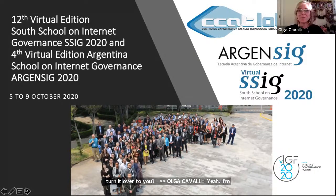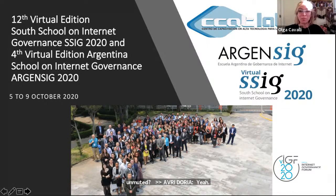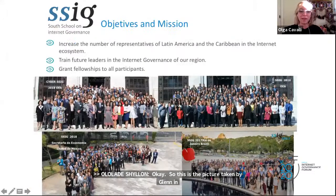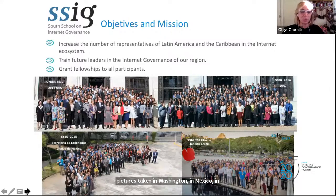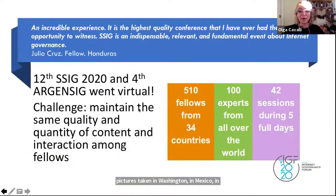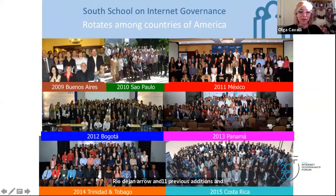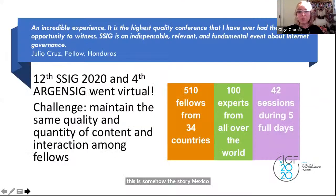This is a picture taken by Glenn in Mexico last year. I just wanted to show some pictures taken in Washington and Mexico and Rio de Janeiro in the 11 previous editions. This is somehow the story in Mexico, Sao Paulo, Buenos Aires, Bogota. Avery was part of some of these schools in person, but this year we couldn't make it face to face because we were going to organize it at the University of Buenos Aires.